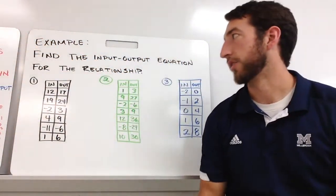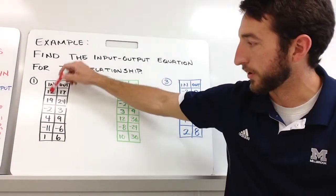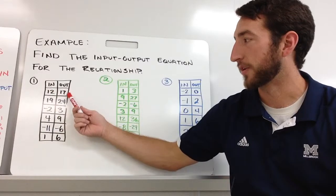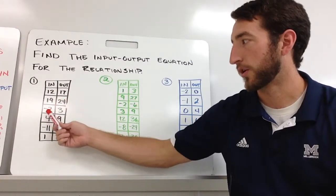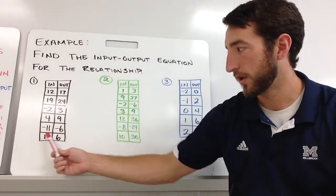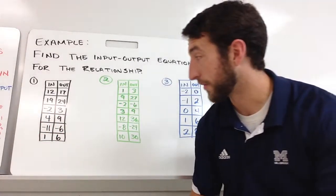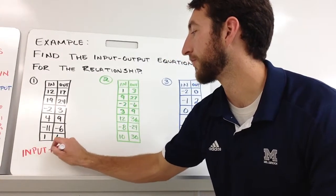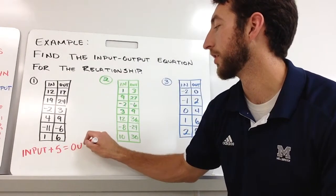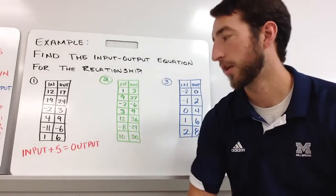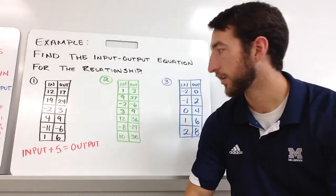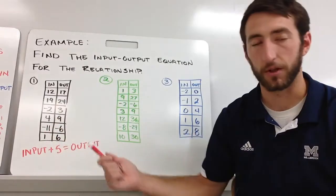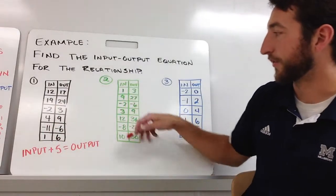Now for these tables we want to find the relationship between inputs and outputs. Our input is 12, output is 17; input is 19, output is 24. There should be a pattern — it looks like we're adding five each time. So input plus five equals output. Negative eleven plus five gives negative six. That's that one.